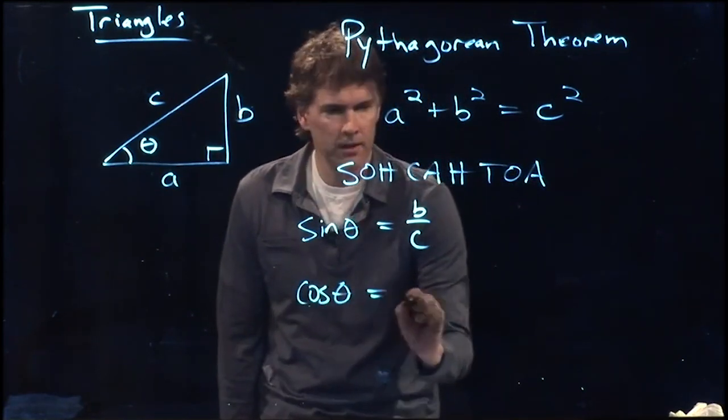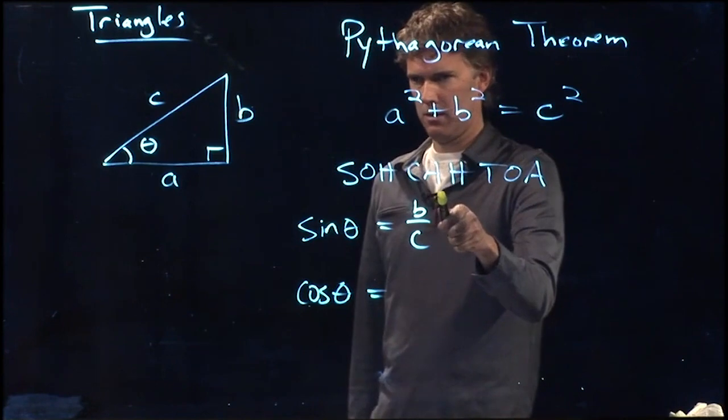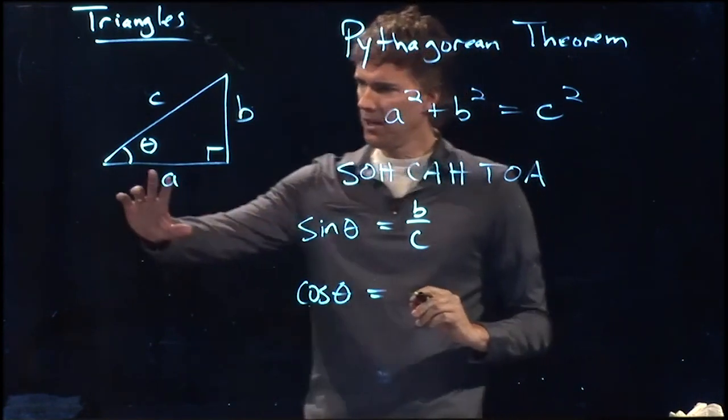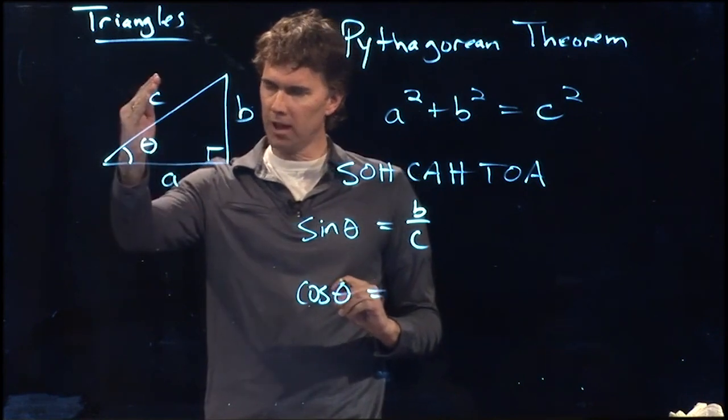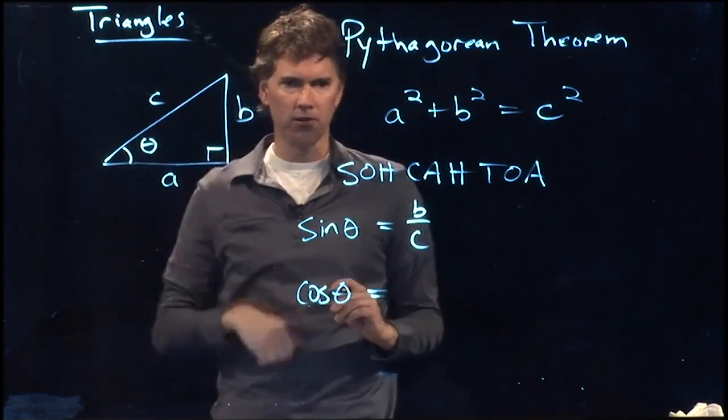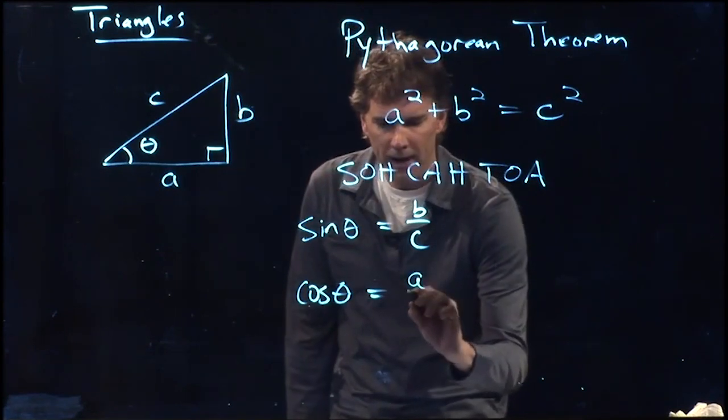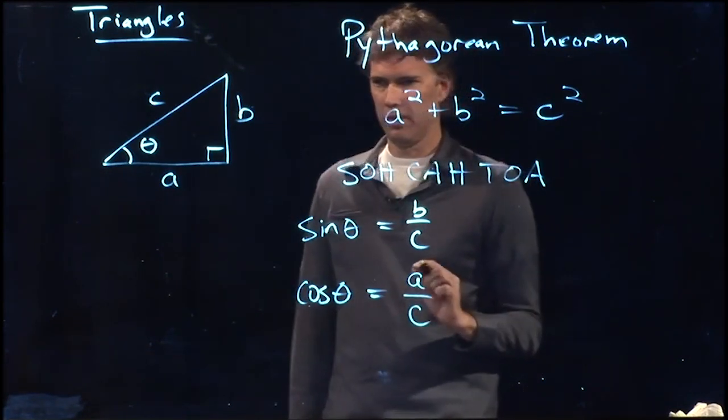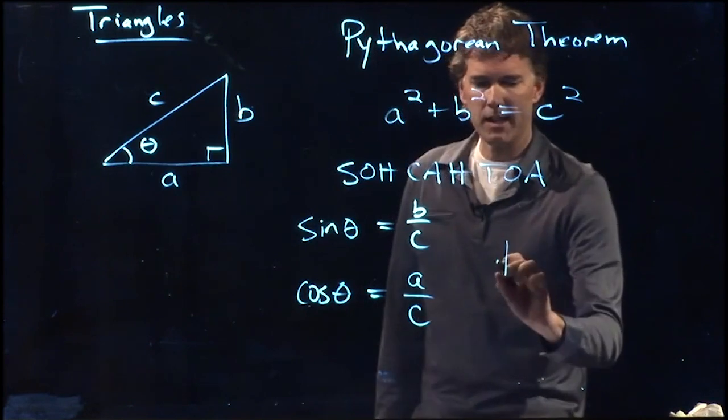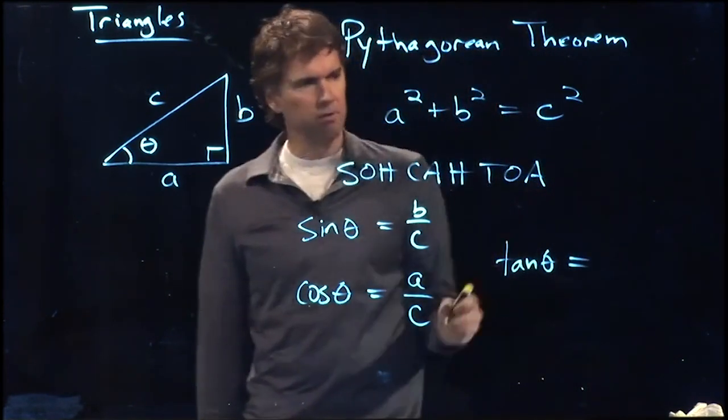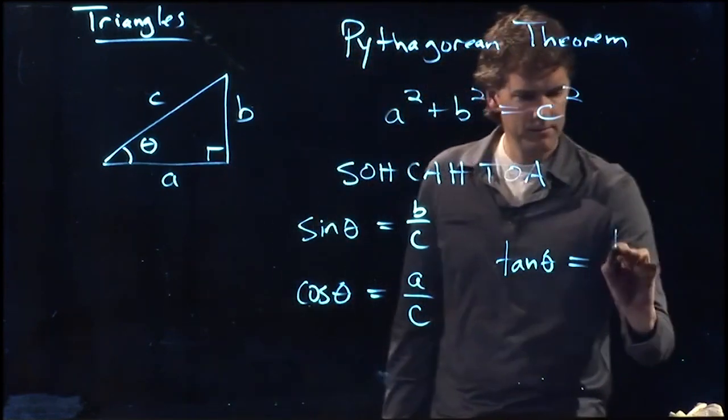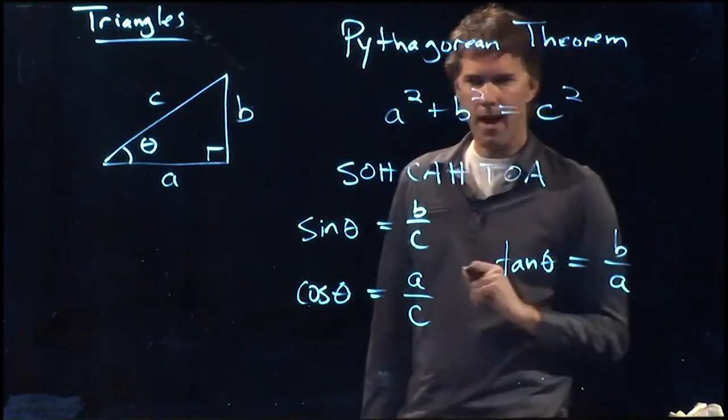Cosine of theta is adjacent over hypotenuse. Adjacent means adjacent to the angle. If this is a hypotenuse, this is the only other side that is adjacent to the angle. So we have to have a over c. And then finally, tangent of theta is opposite over adjacent, which would be b over a.